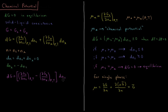Substituting dN_L = -dN_S, the change in Gibbs energy becomes the partial derivative of the Gibbs energy of the solid with respect to number of particles minus the partial derivative of the Gibbs energy of the liquid with respect to number of particles, each at constant pressure and temperature. With these derivatives appearing, it's convenient to define a new quantity: μ_α, where α denotes a phase. μ_α equals the partial derivative of the Gibbs energy of phase α with respect to the number of moles of particles in that phase at constant pressure and temperature. So μ is a function of pressure and temperature, and μ_α is called the chemical potential.